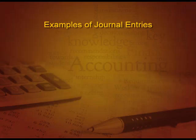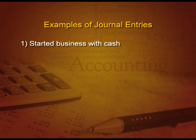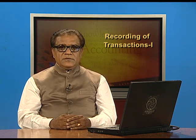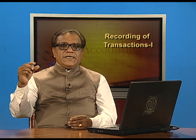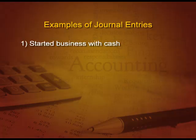Let us see some examples of journal entries. Started business with cash. What will be debited? Cash — because cash is an asset, and an asset will be debited when it comes in. So cash account debit and capital account credit, because it is increasing your capital. Started business with cash: what is coming in? Cash. So asset is debit. And who is contributing capital? Capital increases when you contribute the money. So the entry is: cash account debit, To capital account.